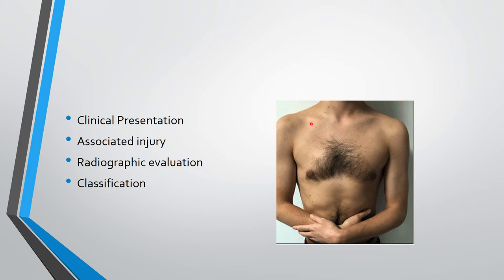Clinically, the patient presents with the arm adducted on the side, elbow flexed, and supported by the other hand. Associated injuries include rib fracture, which is the most common at 10% of cases, then glenoid fracture, proximal humerus fracture, or scapula fracture.